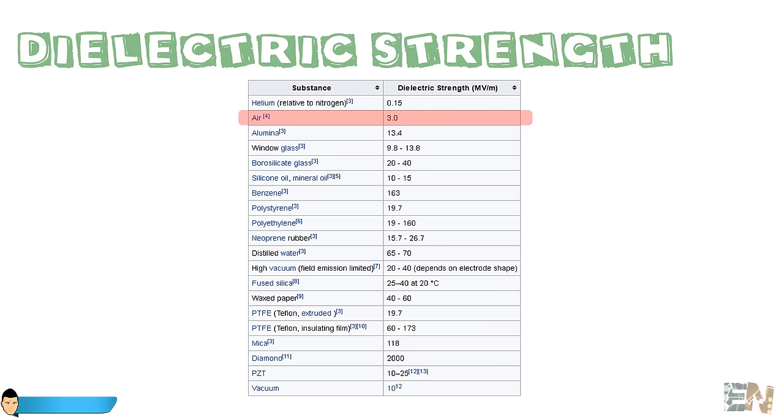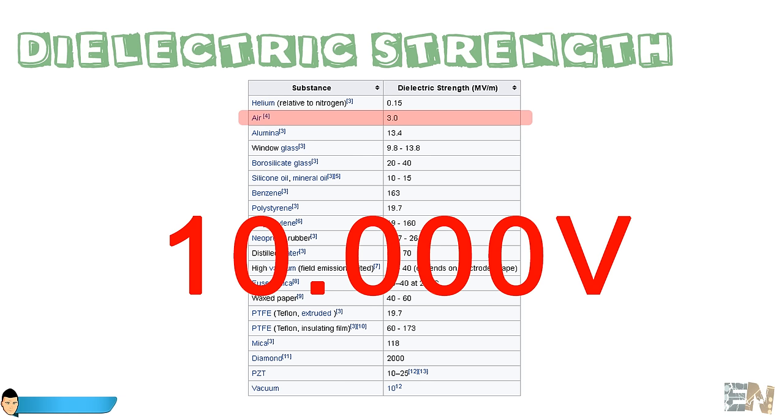So 3 megavolts per meter is 3000 volts per millimeter. So in the best condition we should have a 3000 volts differential voltage between two electrodes separated one millimeter one to each other in order to create a discharge. If we want our arc to have 3 or 4 millimeters we should have about 10,000 volts. So how can we obtain these 10,000 volts?